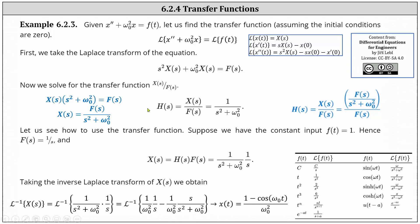To find the transfer function H(s), we need to determine X(s) divided by F(s). We factor out X(s) and then divide by the quantity s squared plus omega sub zero squared, giving us X(s) equals F(s) divided by the quantity s squared plus omega sub zero squared. To find H(s), we divide X(s) by F(s) — the F(s) terms simplify out, leaving us with H(s) equals one divided by the quantity s squared plus omega sub zero squared.